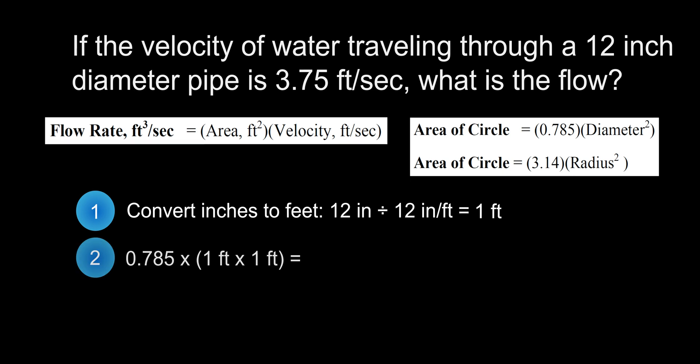In step 2, we will use the area of a circle formula. I have opted to use the version with diameter squared because the question uses diameter already. This will look like 0.785 times 1 foot squared. This will solve for the cross-section area of the pipe, which in our case equals 0.785 square feet.